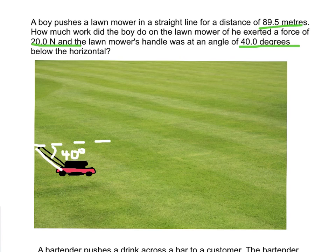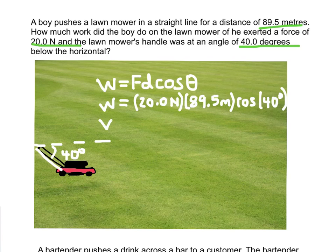And I know how much force the boy applied to the lawnmower, and I also know the displacement. So let's put our equation in. Work is equal to force times distance times the cosine of theta, and then let's go ahead and plug in our numbers. And when we plug this into our calculator, 20 newtons times 89.5 times the cosine of 40, we end up with amount of work of 1,370 joules.